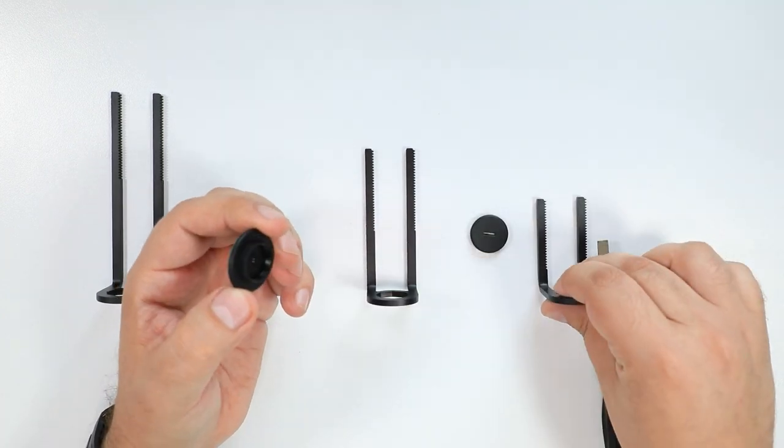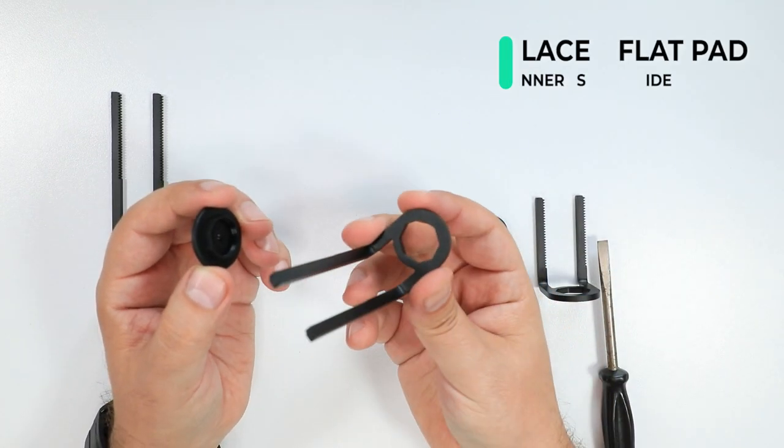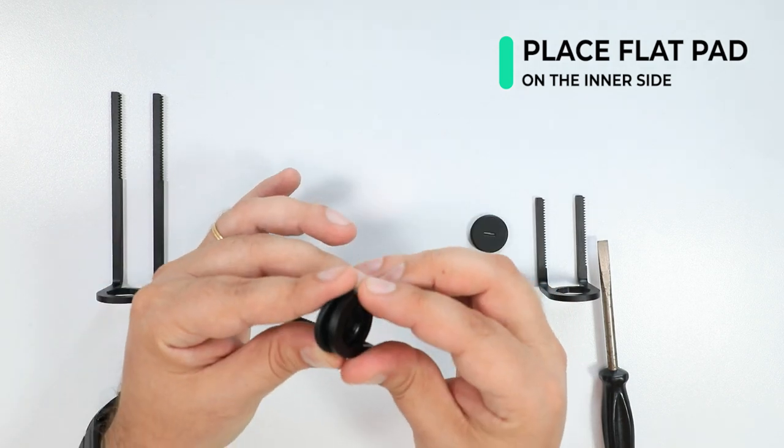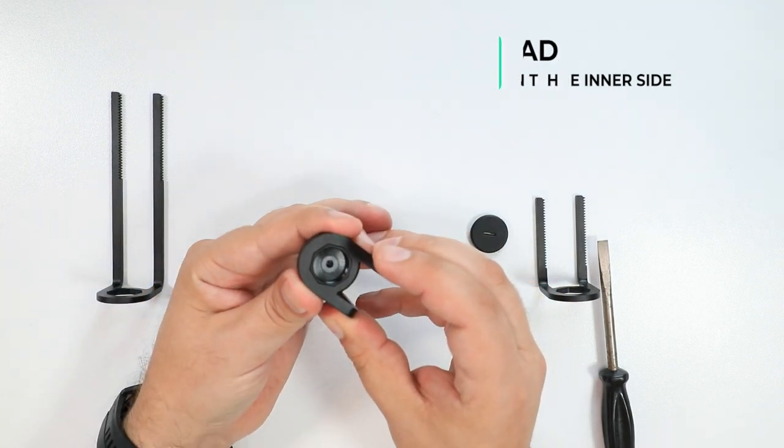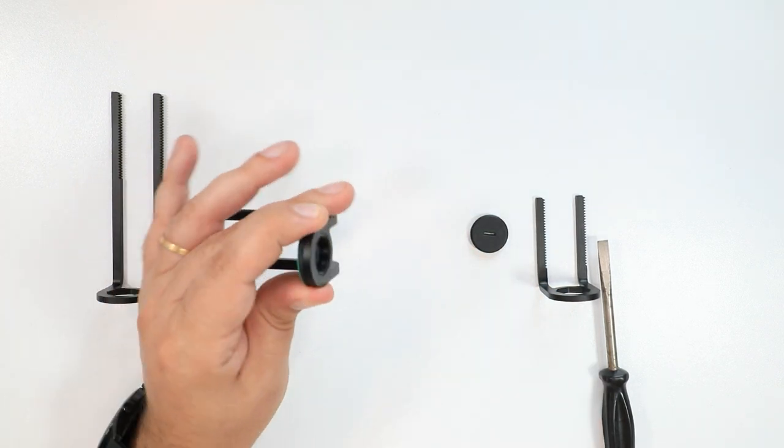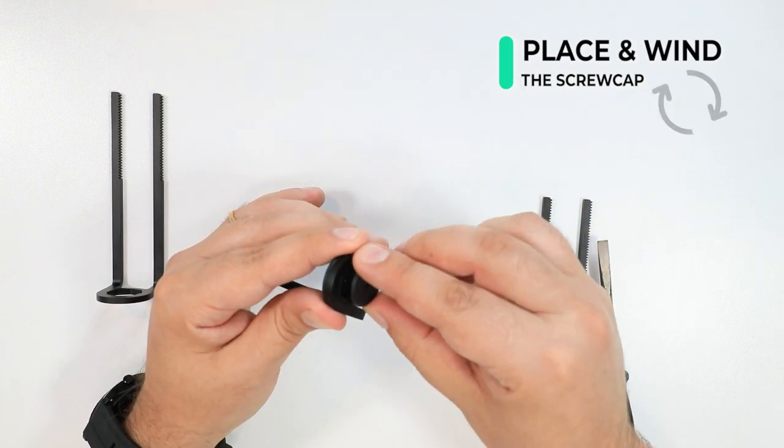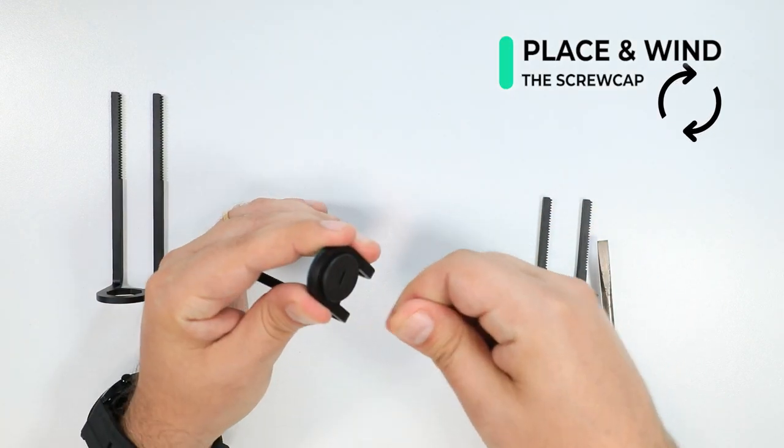Remove both halves of the flat pad and place the flat pad on the inner side of the new clamp arm you'd like to use. Next, replace the cap and tighten it with the screwdriver.